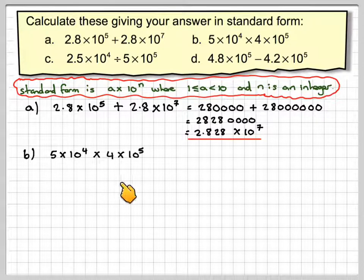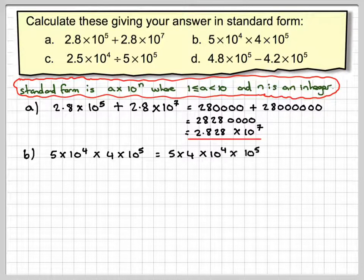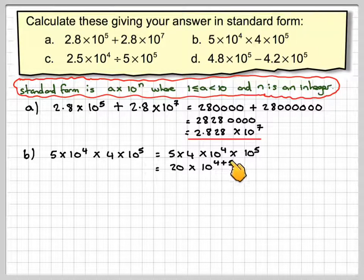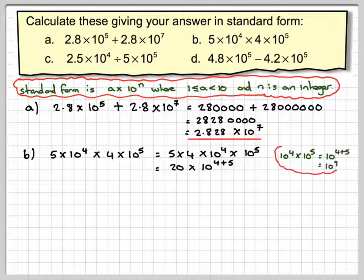We're going to rewrite it as 5 times 4 times 10 to the 4 times 10 to the 5. 5 times 4 is 20. And then this becomes 10 to the 4 plus 5. When you've got the same base, the powers you add from the rules of indices. So 10 to the 4 times 10 to the 5 is 10 to the 9.